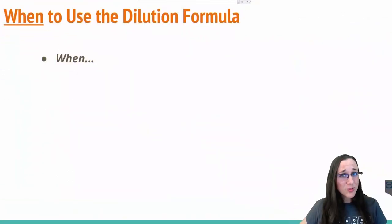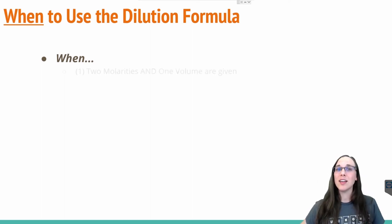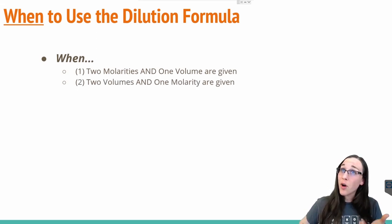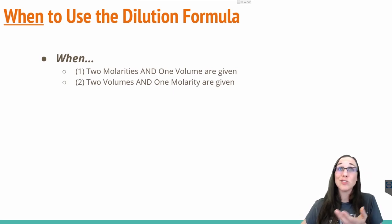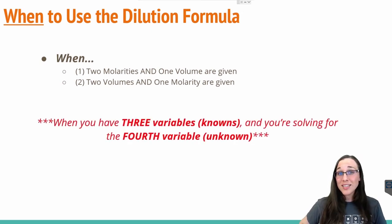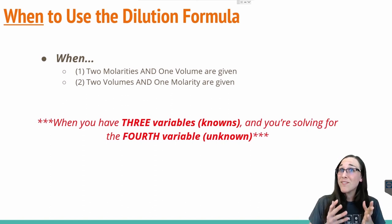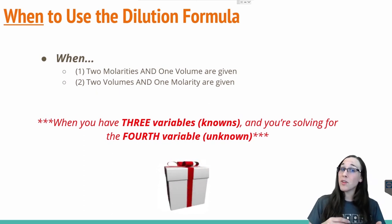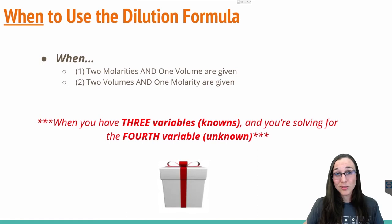So how do you know when to use this dilution formula, the M1V1 equals M2V2? Well, it's pretty straightforward as long as you can pick out what you're given. So if you were given 2 molarities, so 2 moles per liter, 2 concentrations, and 1 volume, you can use it. If you were given 2 volumes, so 2 things that were in milliliters or liters, and 1 molarity, 1 concentration or moles per liter units, you know that you could use this dilution formula. The overall takeaway here is that whenever you're given 3 variables that are knowns, they're given to you as a gift in the problem, and you're solving for the 4th variable, the unknown, you can use the dilution formula.